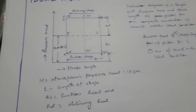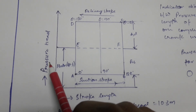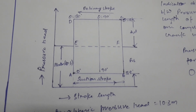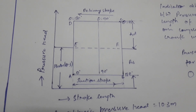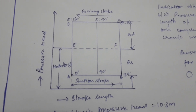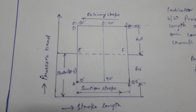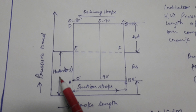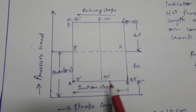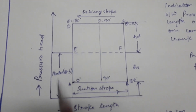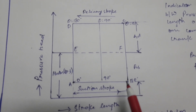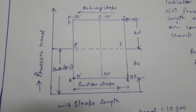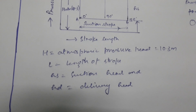In the diagram, the vertical axis is pressure head and the horizontal axis is stroke length of the piston for one complete revolution of the crank. The movement of the piston is described by crank angle — at zero degrees, 90 degrees, and 180 degrees — and also known as inner dead center to outer dead center. H atmospheric is 10.3. This is the delivery stroke and this is the suction stroke.